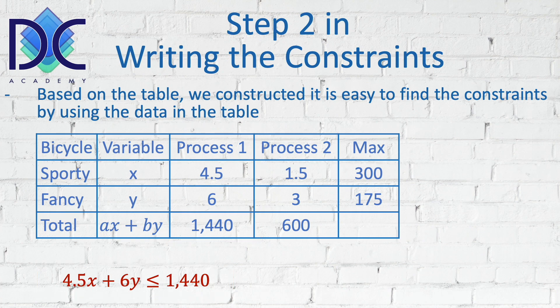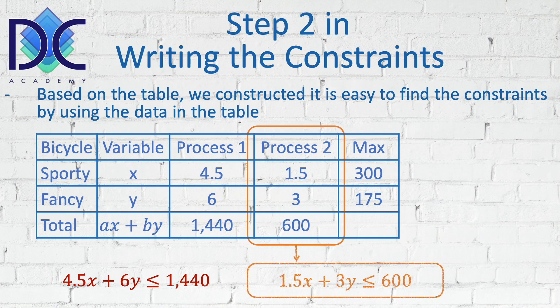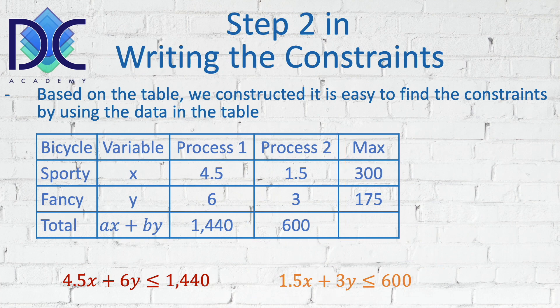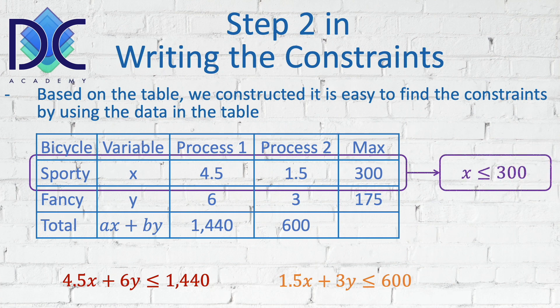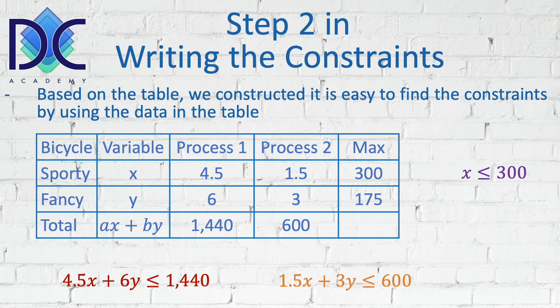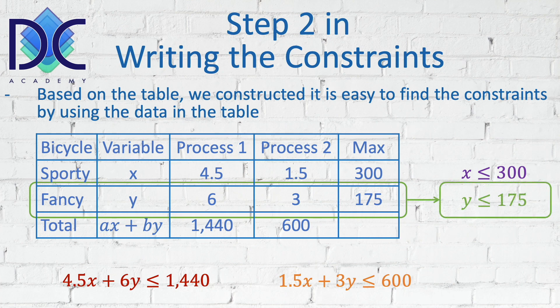We can now do the same for process two. Keeping the previous equation, we write the constraint for process two as: 1.5x + 3y ≤ 600. The next element is the limitation on the sporty bike: x ≤ 300. And for the fancy bike: y ≤ 175.